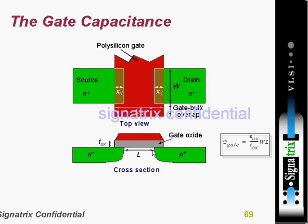LL is the channel length. They are also showing gate-bulk overlap — the gate overlaps the bulk region here. We will look at that. This overall structure relates to the gate capacitance.